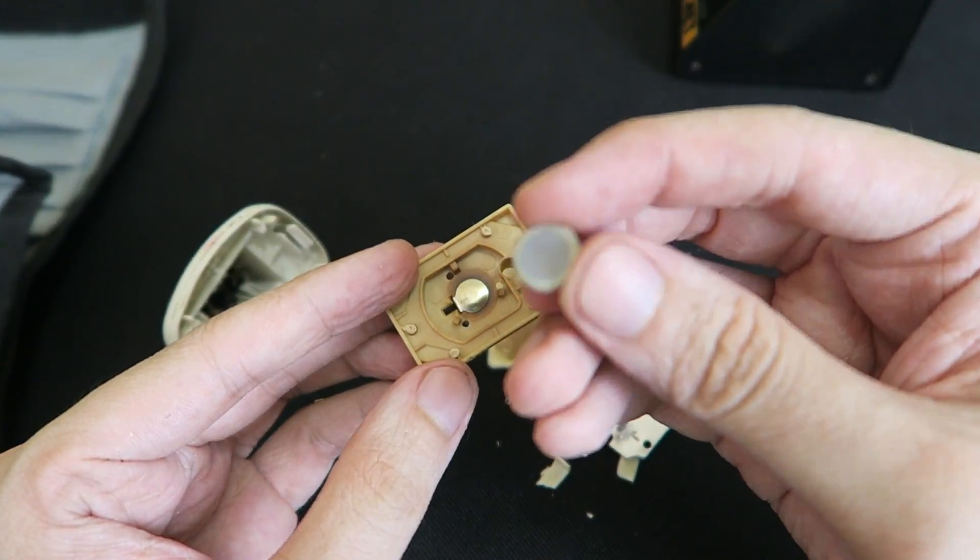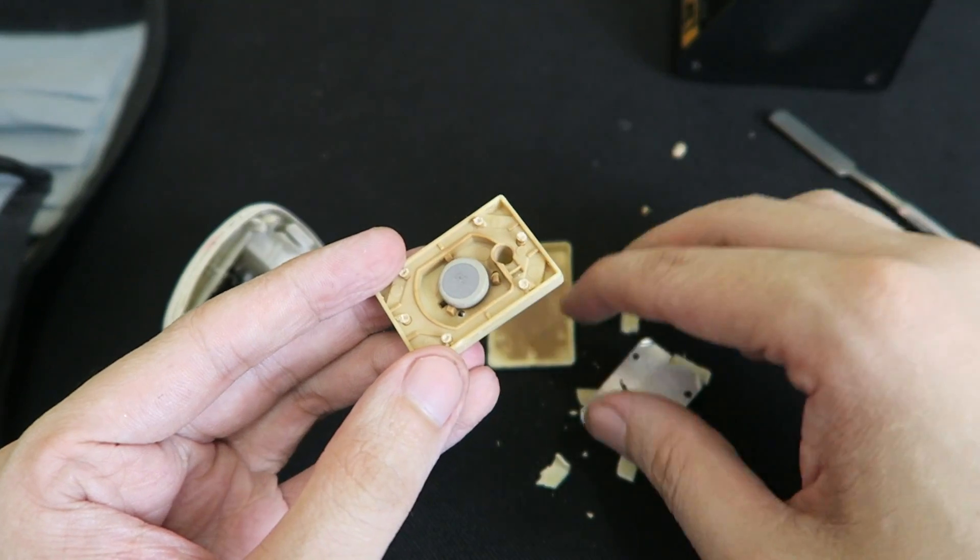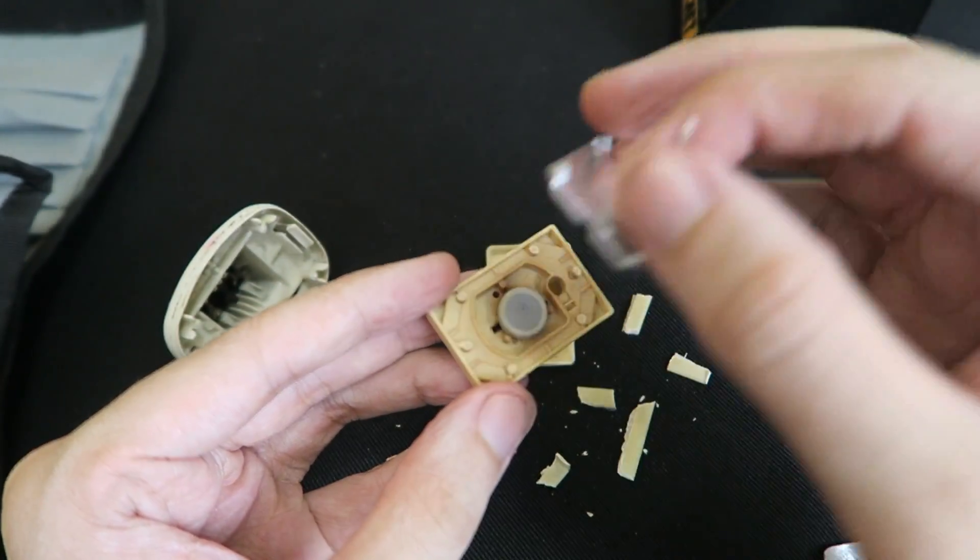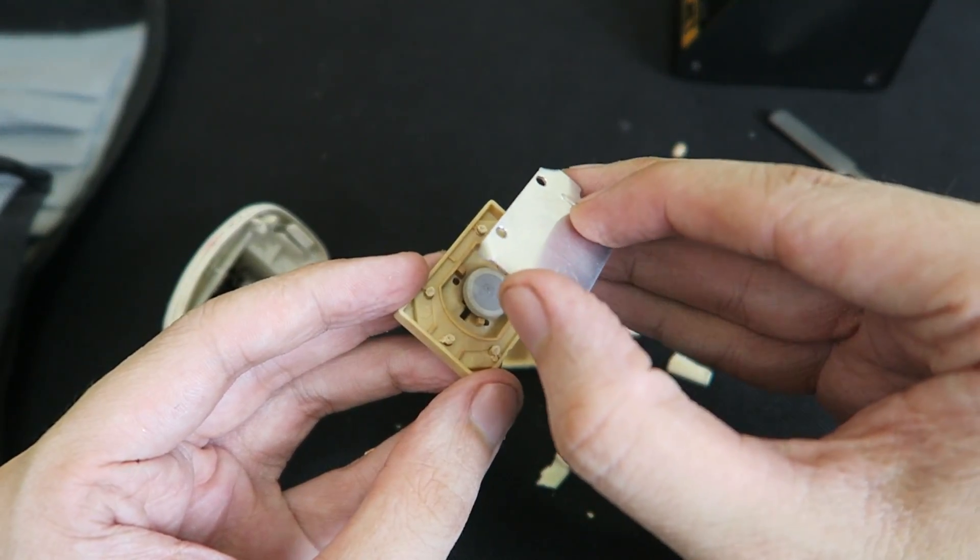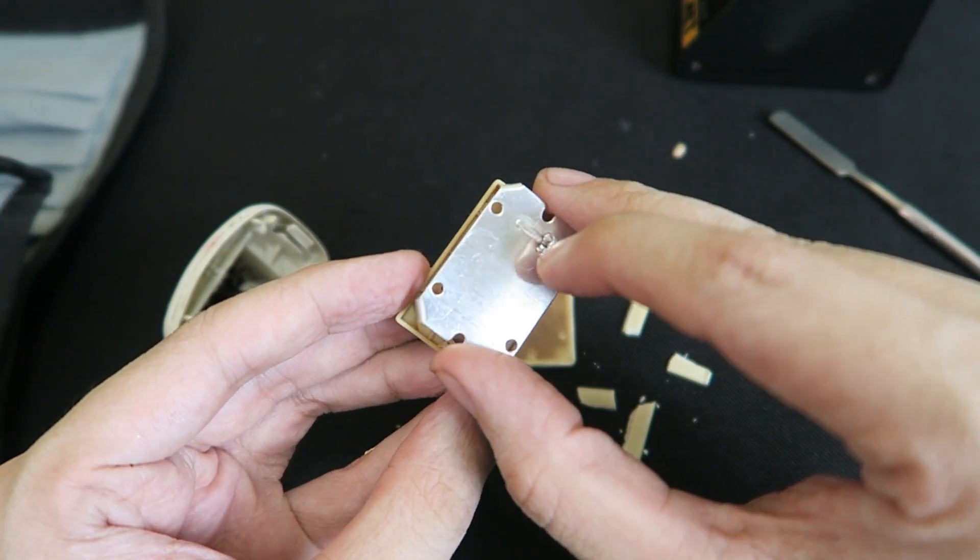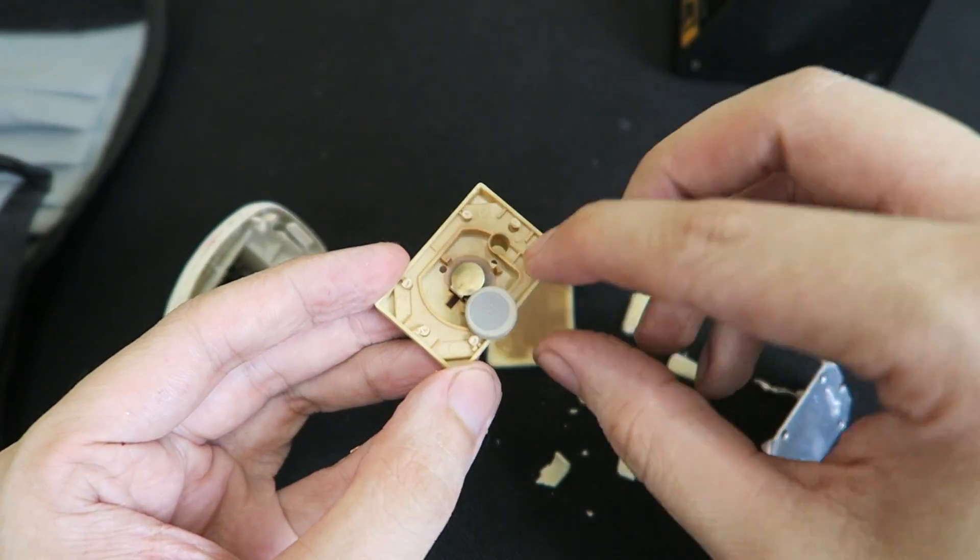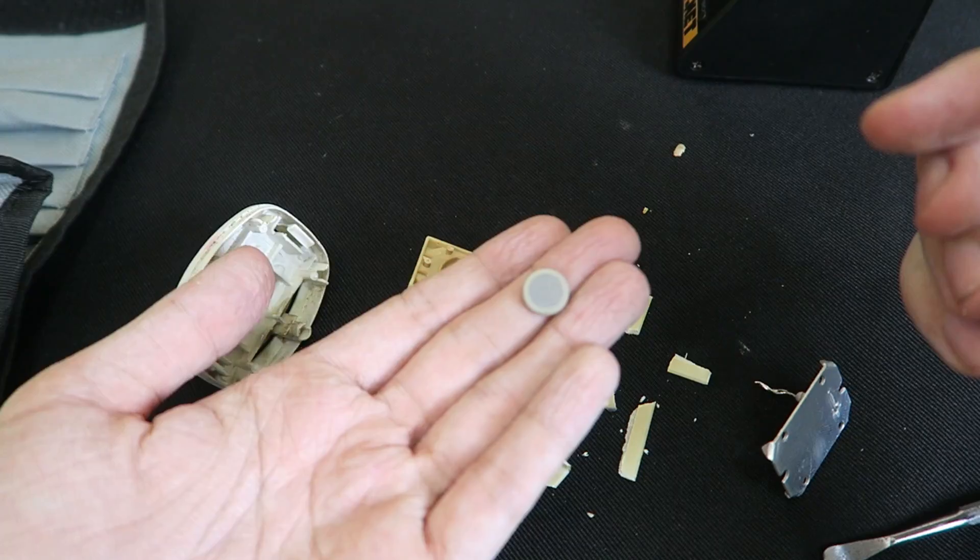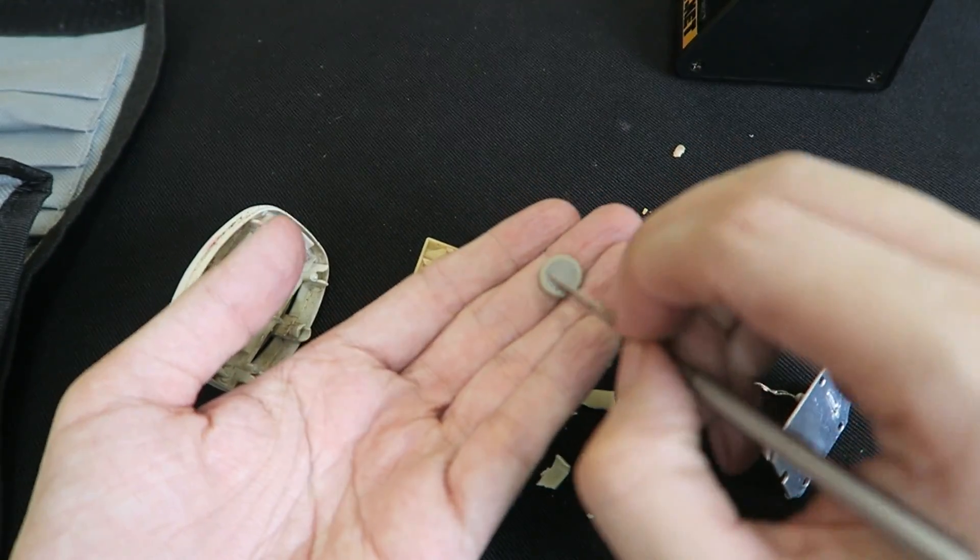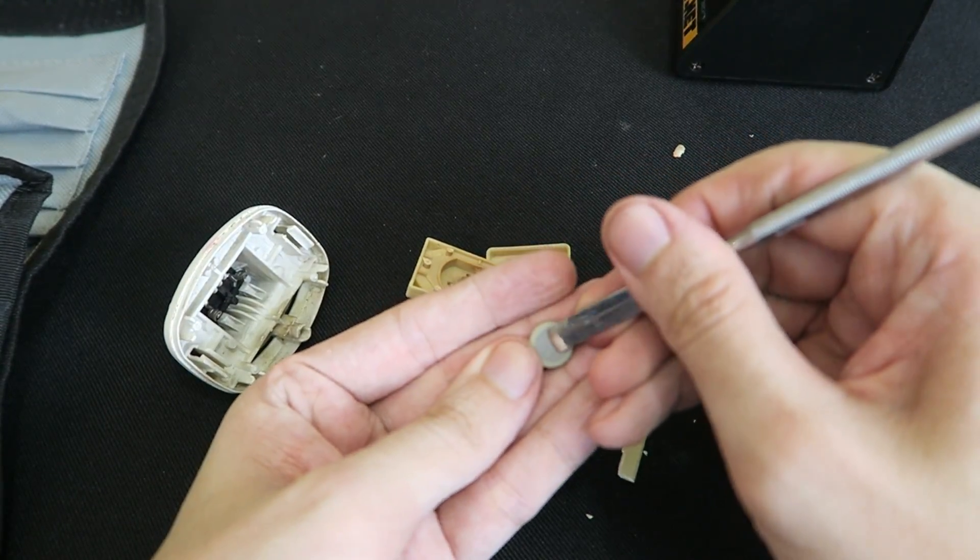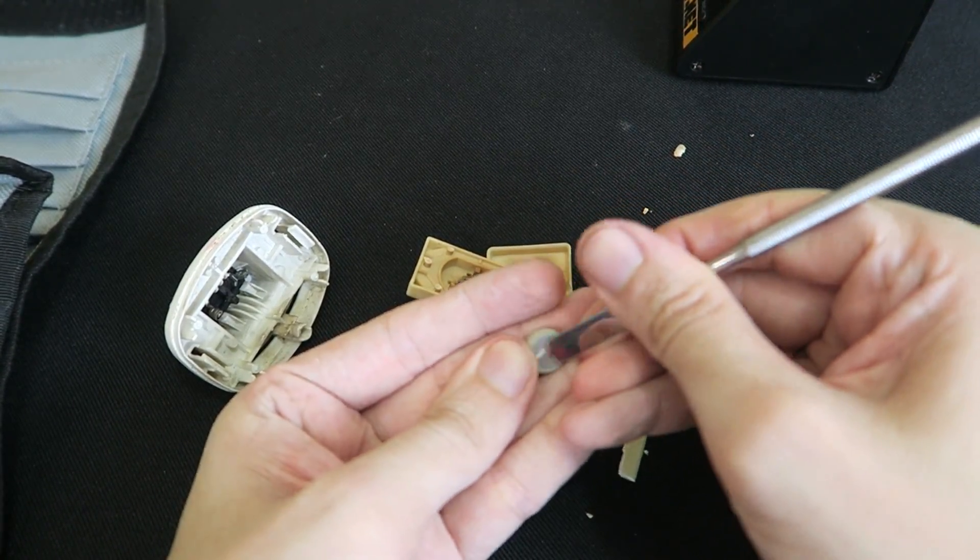Now I'm not exactly sure what this is but whatever it is it must allow power to flow through it because it's making contact with the metal plate and completing the circuit but I'm not exactly sure what it is to be honest. It's pretty heavy and it sounds like some kind of ceramic or metal. Let's scratch away at this.